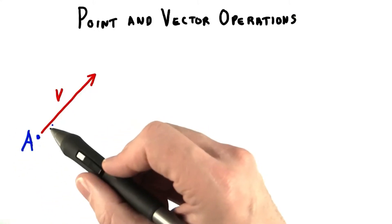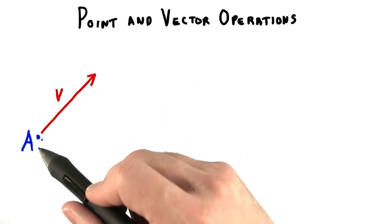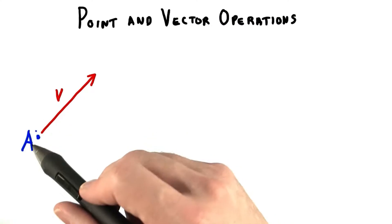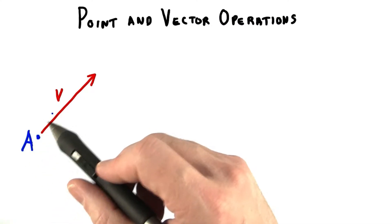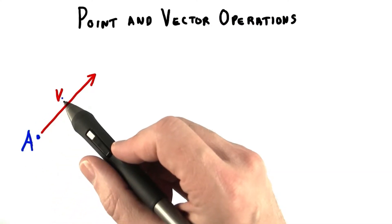A point is a position, and a vector describes a motion. We can combine points and vectors in various useful ways by adding or subtracting their coordinates from one another.